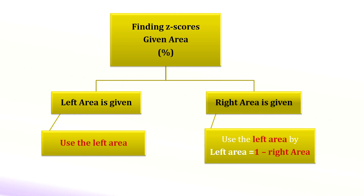In summary, we use the left cumulative area to find z-scores. If the right area is given, then subtract the right area from 1 to look up the table. Thank you for watching. See you next time.